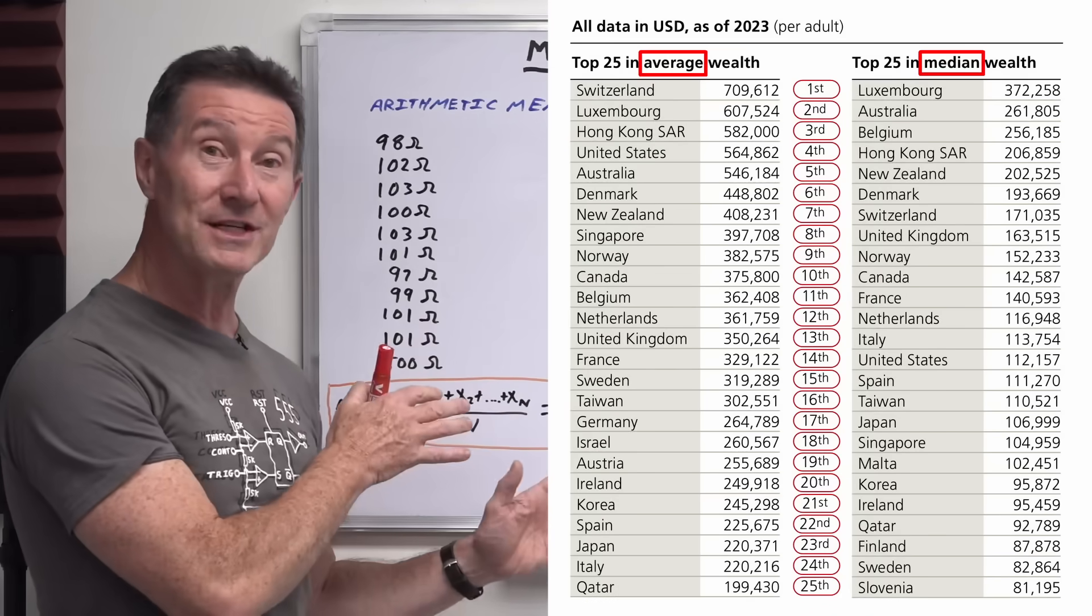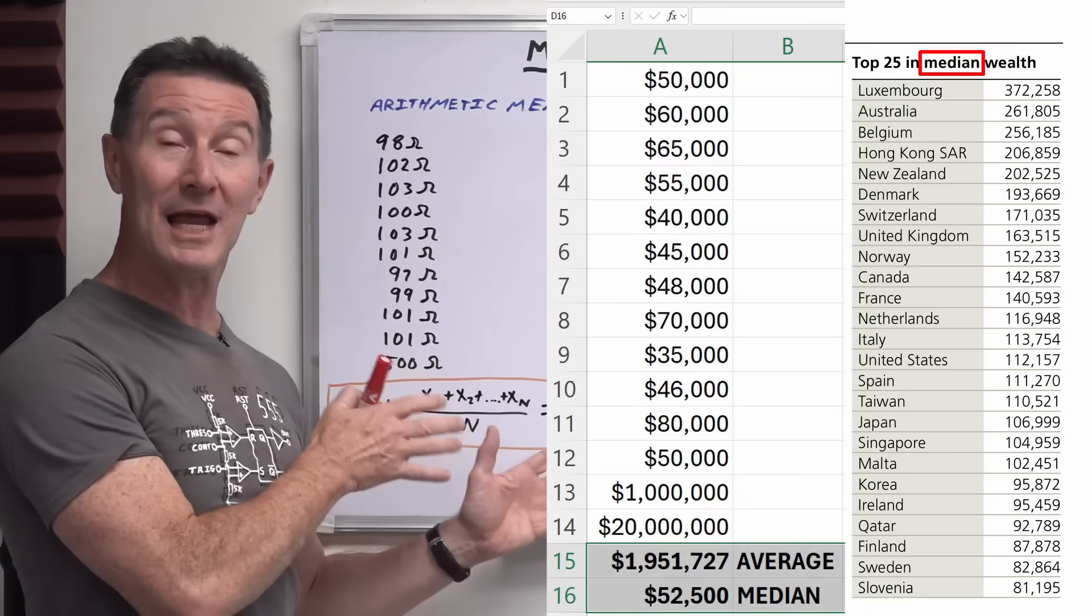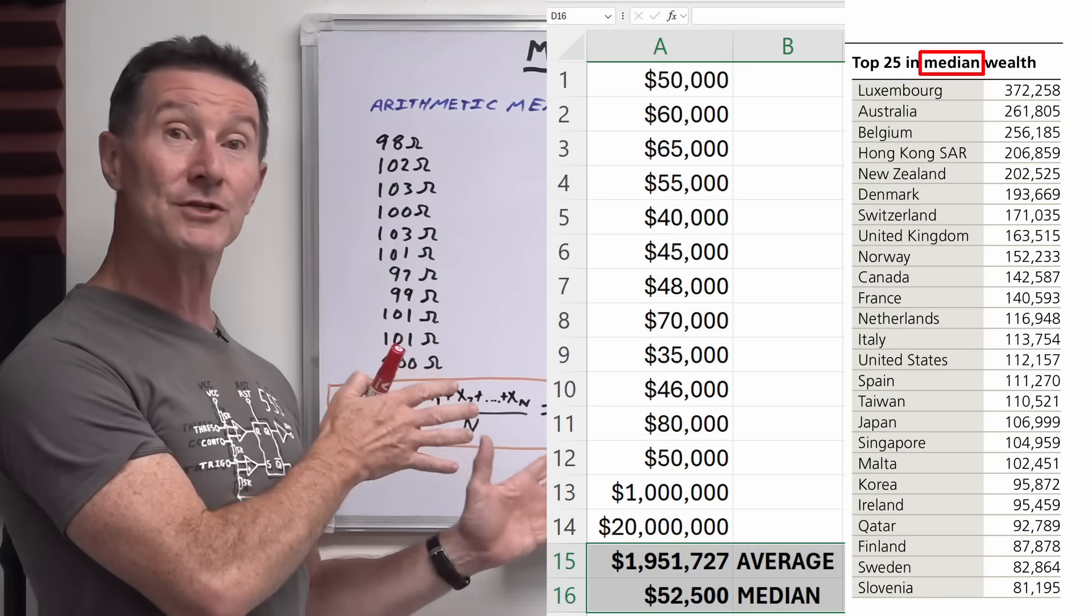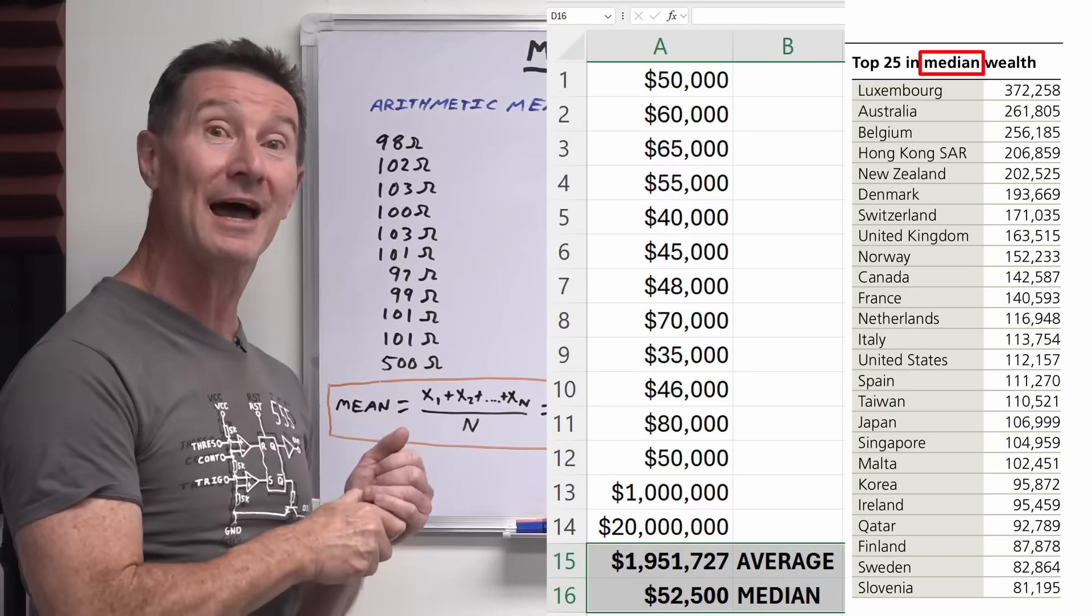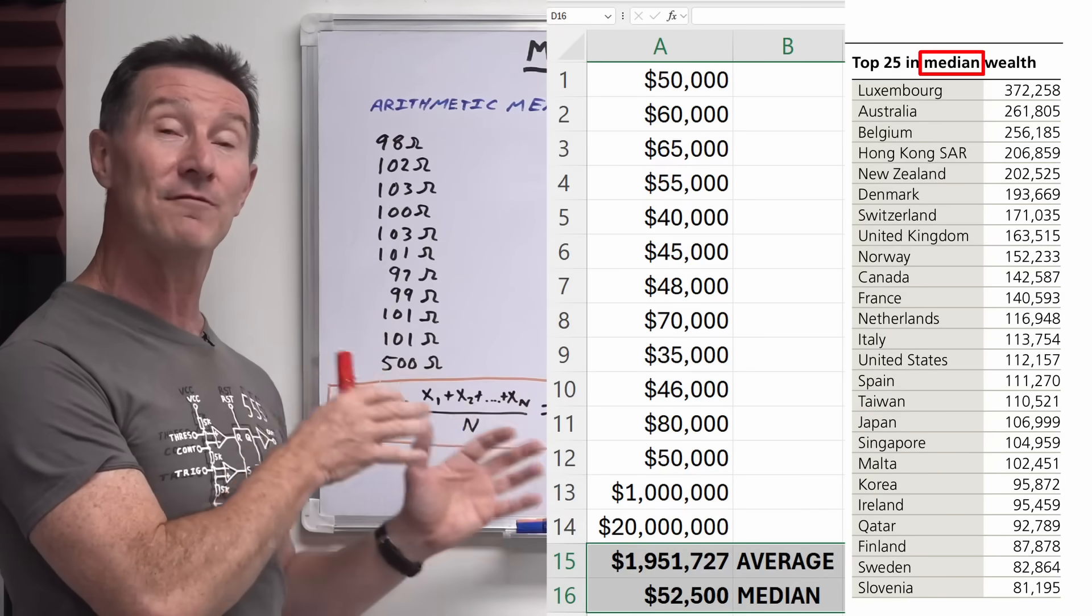So once again going back to the house price example or the wage example, where a lot of richy riches or rich mansions can skew that data, same thing can happen with this individual wealth.